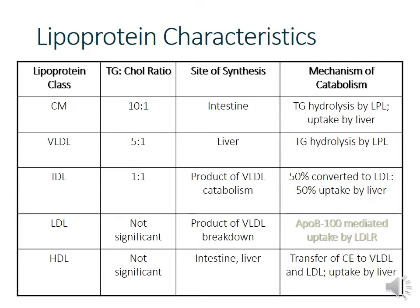The triglyceride content of chylomicrons is highest at roughly a 10-to-1 ratio with cholesterol. As they get metabolized through lipoprotein lipase, the triglyceride content goes down. Some medications are better for treating isolated hypertriglyceridemia while others are better for processing LDL. HDL is a more protective cholesterol component, and some medications can work toward increasing HDL content.